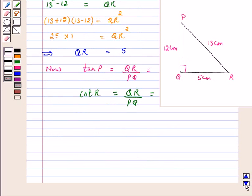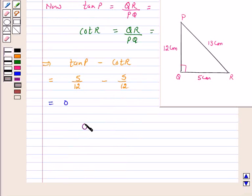This implies tan P minus cot R is equal to 5 by 12 minus 5 by 12, and this is equal to 0.